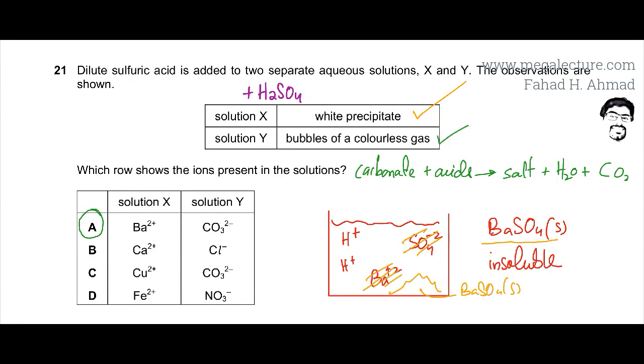But I'll also comment on the other options. For example, C and D can't be correct because copper and iron are transition metals. So if they end up forming a precipitate, a solid just like barium over here, that is going to be a colored compound. It's not going to be a white precipitate. So transition metals can't be present since the observation shows a white precipitate.